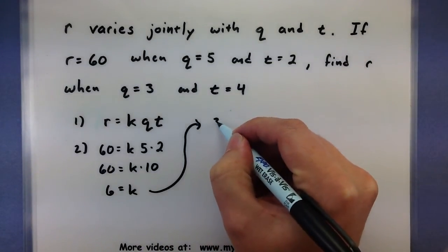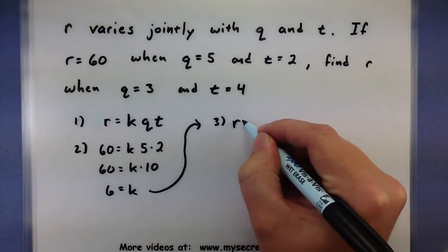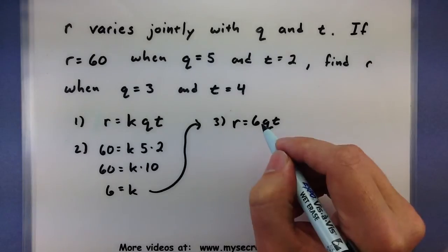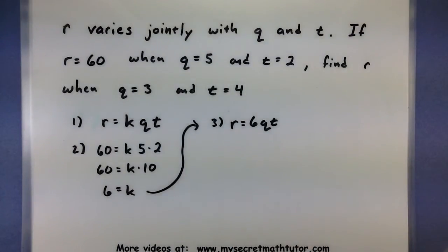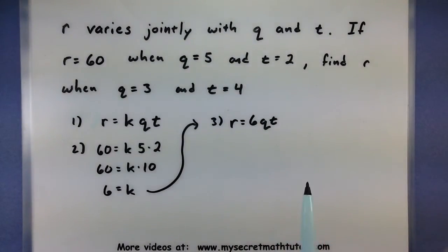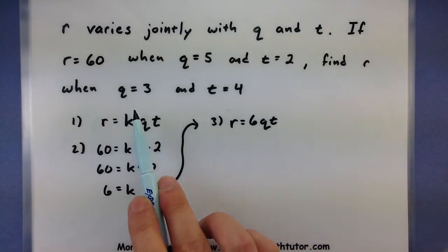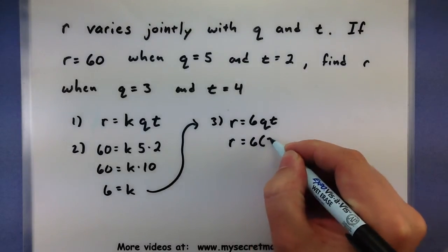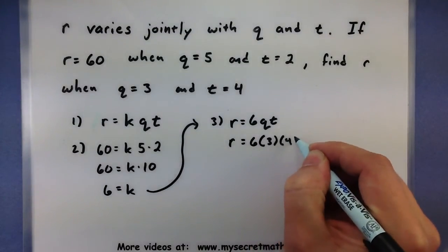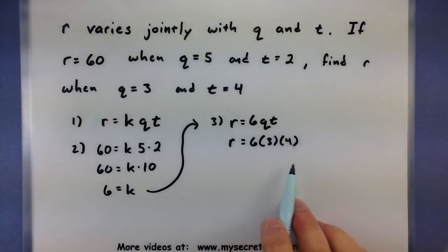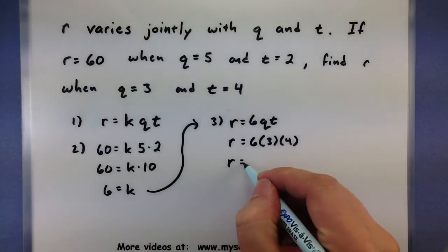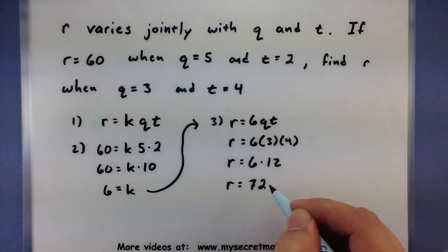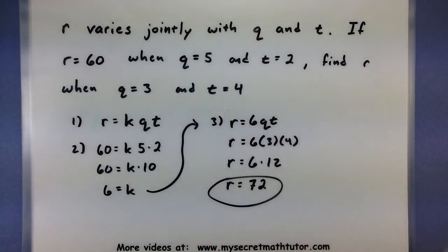So now my formula is r equals 6qt. That's looking pretty good. Now let's solve the rest of the problem. Find r when q equals 3 and t equals 4. So q is 3, t is 4. All I have to do is multiply all of these together. 6 times 12, or r is equal to 72. Not too bad.